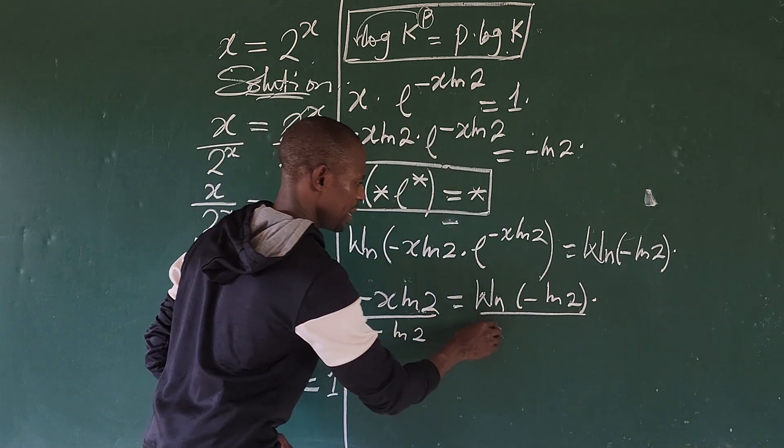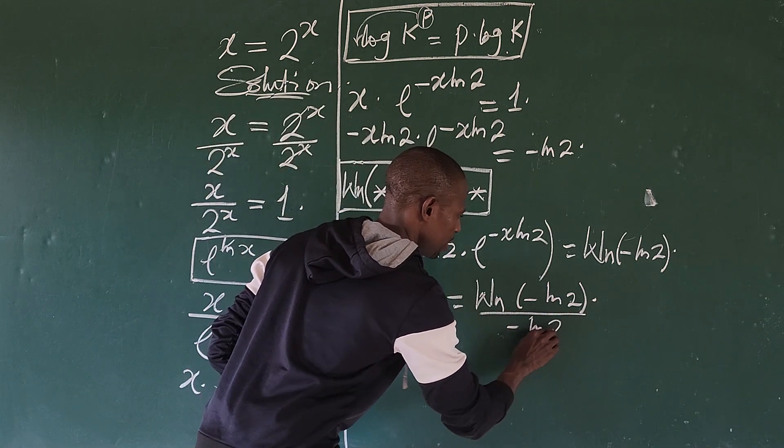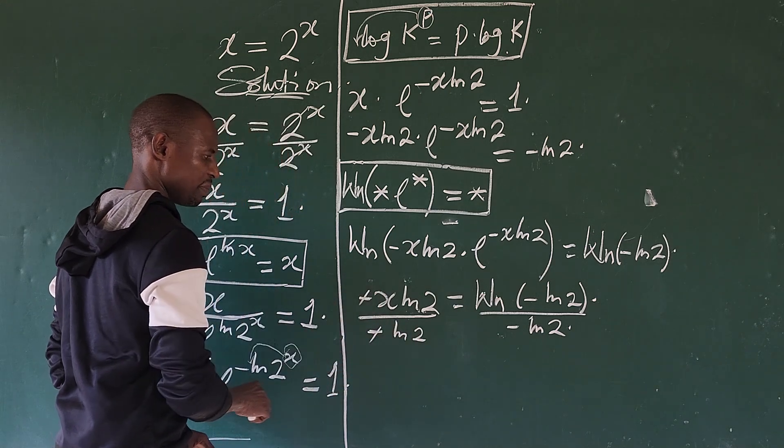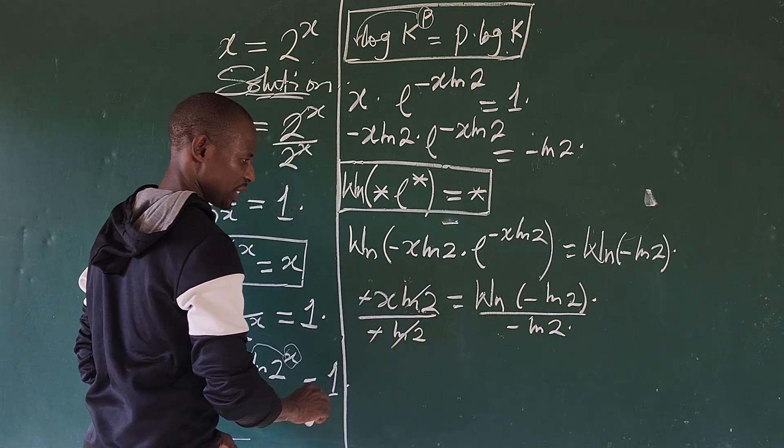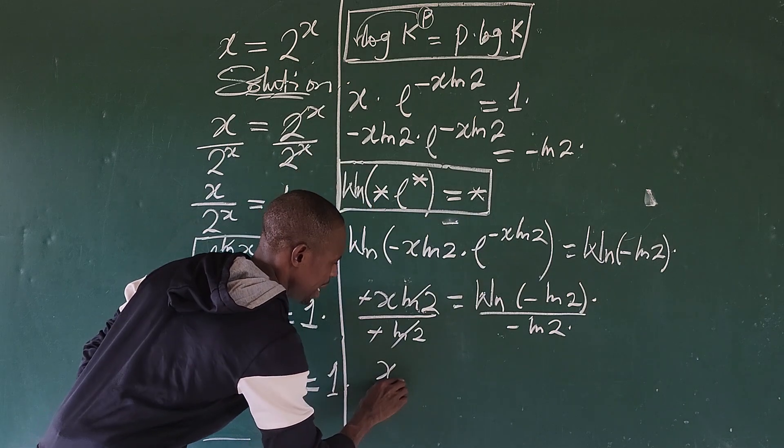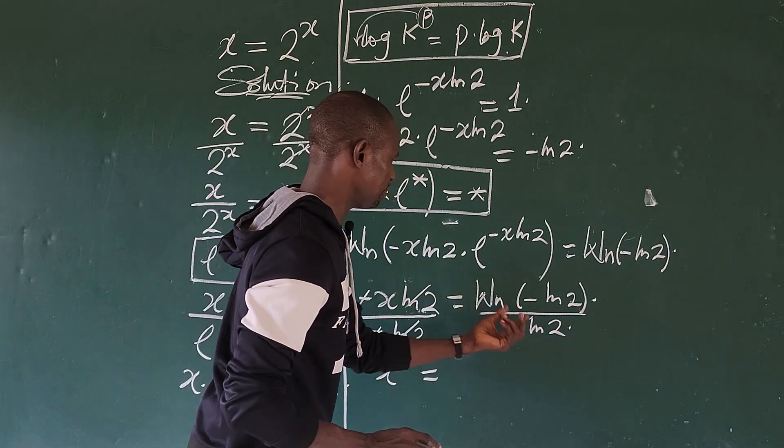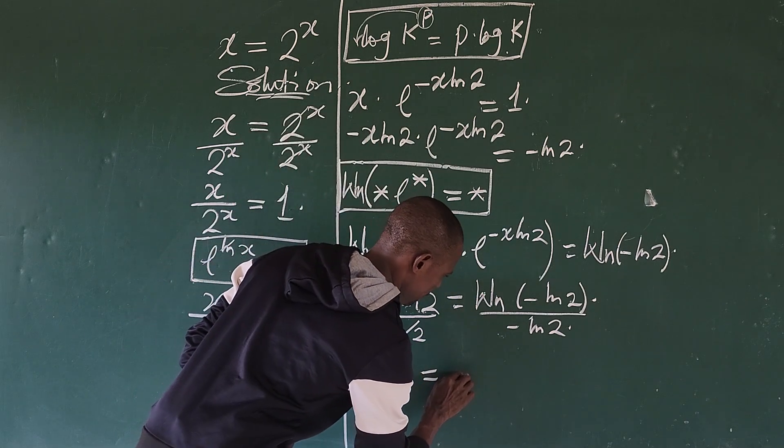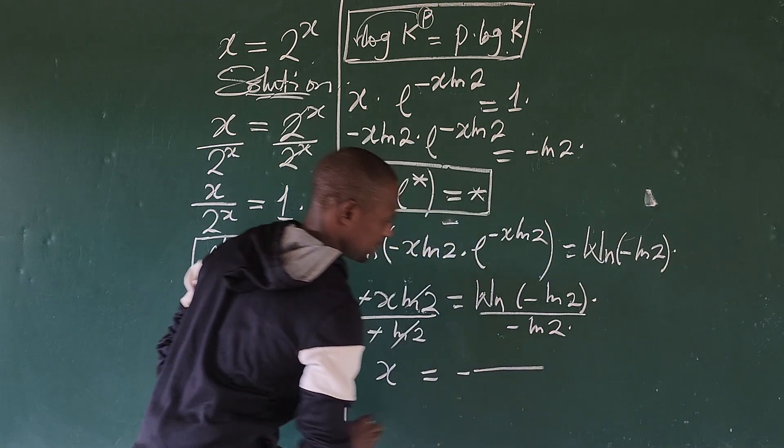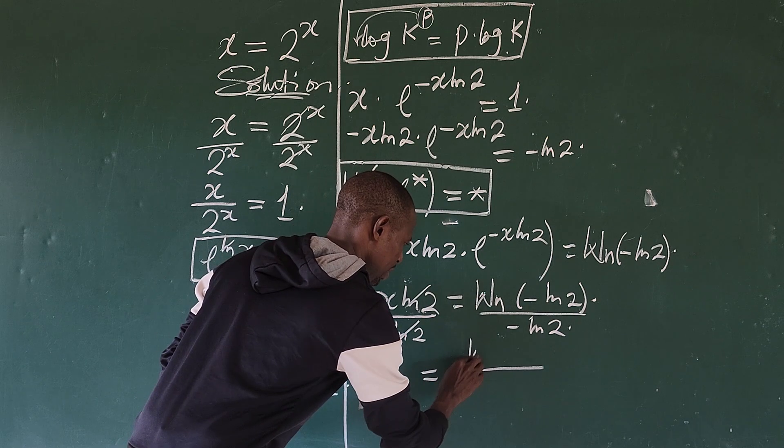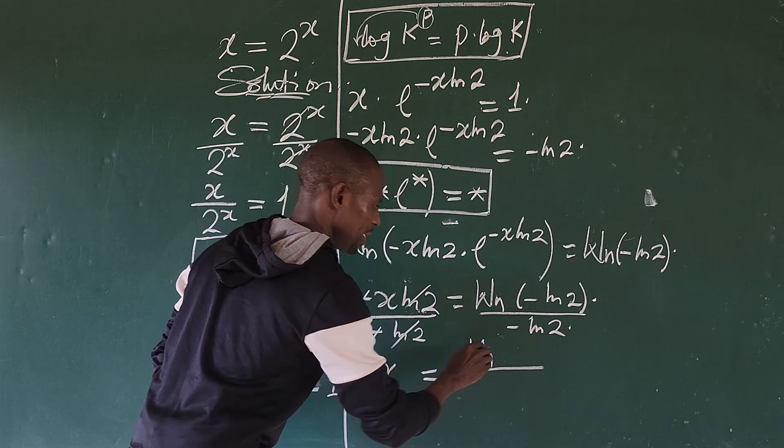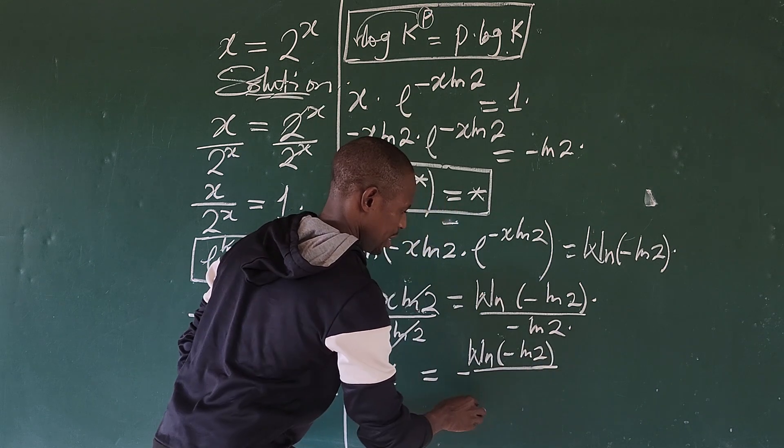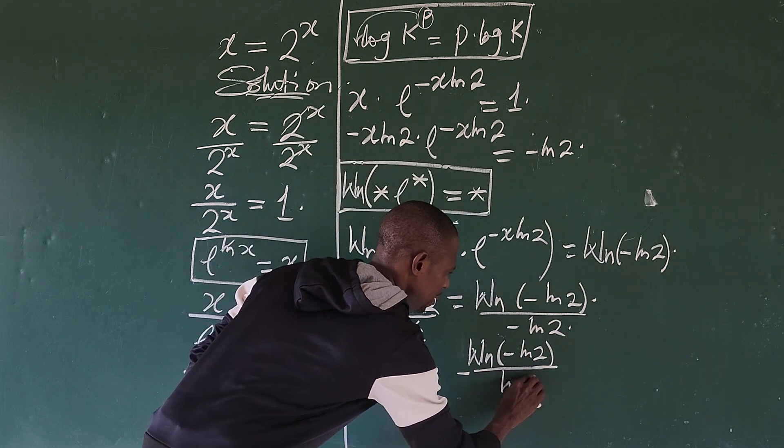Let's divide by minus ln of 2, we also divide this side by minus ln of 2. What happens, this minus goes with this minus, ln of 2 goes with ln of 2. So we are now left with x equal to, again this minus can come up here. So we're going to have minus, let's draw a line here, the Lambert W of minus ln of 2 all over ln of 2.